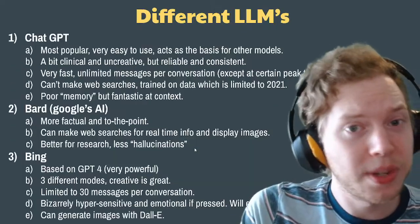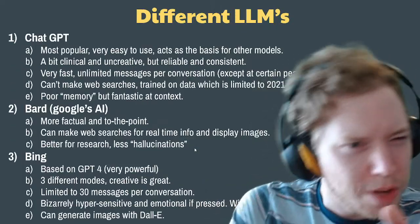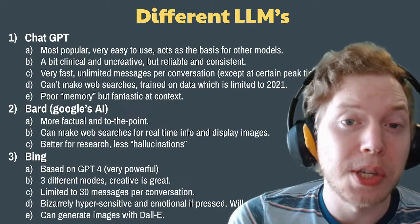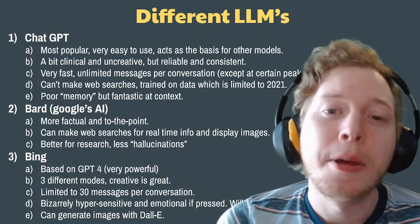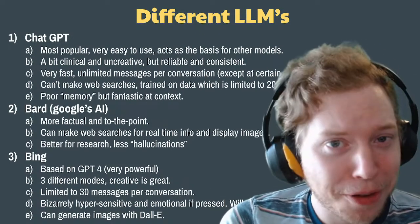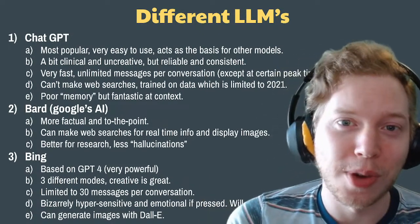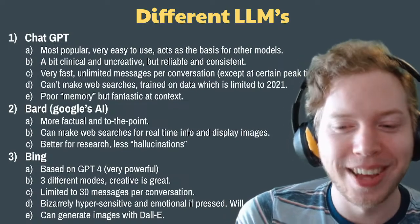So those are the three major ones. GPT is the most reliable — if you don't know what else to use, it's worth a shot. BARD is going to be better for research, and Bing is good if you just want to be mean to it.